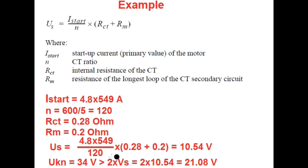We check whether the knee point voltage is greater than two times the stabilizing voltage. The knee point voltage is 34 V, which is greater than 2 × 10.54 = 21.08 V. Therefore the CT requirement is fulfilled.